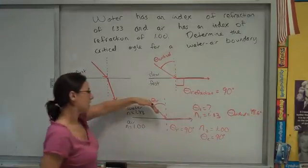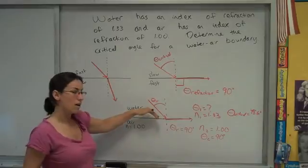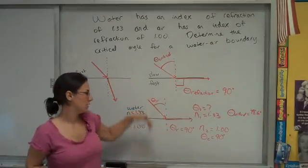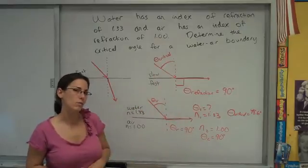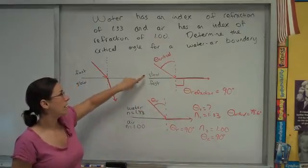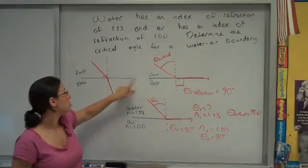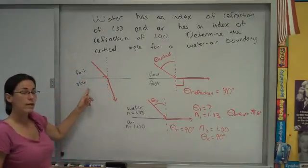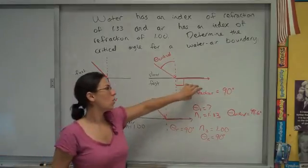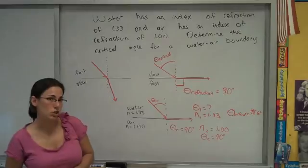Which means any time light is hitting that boundary at greater than 48.6 degrees, no light's going to get out. It's just going to be trapped inside and reflect only. Key things to note for critical angle: It has to be going from slow to fast. There's no critical angle when light goes from fast to slow. And by definition, that refracted angle is 90 degrees.